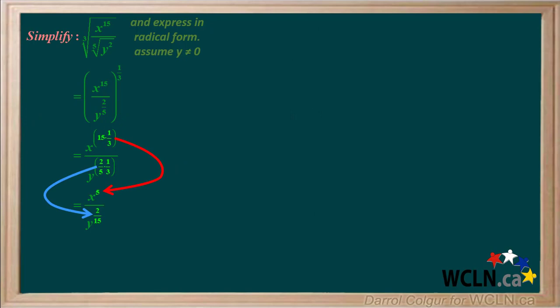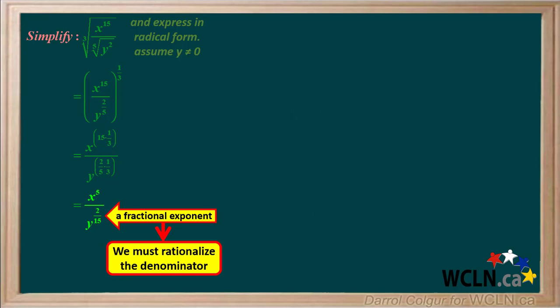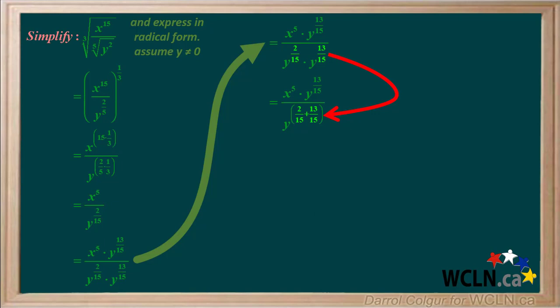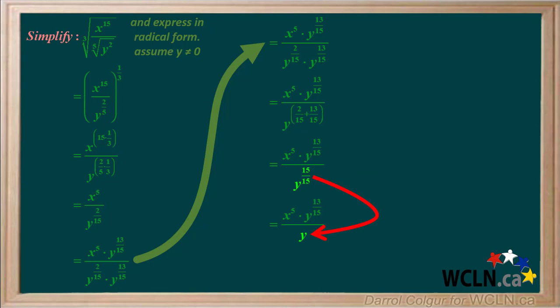Simplifying this gives us x to the 5th over y to the two-fifteenths. We see there is a fractional exponent in the denominator, so we must rationalize the denominator. We do this by multiplying both the numerator and denominator by y to the thirteen-fifteenths. y to the two-fifteenths times y to the thirteen-fifteenths equals y to the fifteen-fifteenths, which equals y to the 1, or just y.